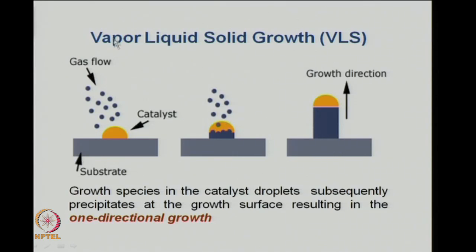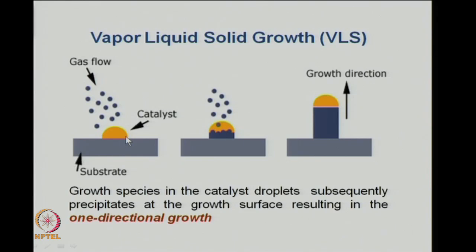As more and more particles impinge on the liquid droplet and precipitate, the column starts moving and you start growing the nanostructured material in one direction. The liquid droplet is always at the tip of this nanorod. This methodology tends to give you nanowires or nanorods, and the dimension of this globule fixes the diameter of the rod — a small globule gives a thin nanowire, a large globule gives a thick nanowire.